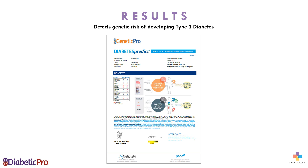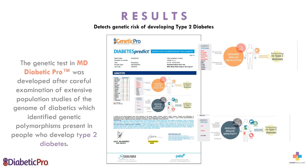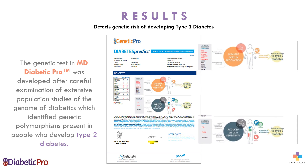Diabetes is a multifactorial disease where the genetic component is important. The genetic test in MD Diabetic Pro was developed after careful examination of extensive population studies of the genome of diabetics, which identify genetic polymorphisms present in people who develop type 2 diabetes. Of the 16 genetic variants, 13 are associated with impaired insulin secretion and the other three are related to insulin resistance.